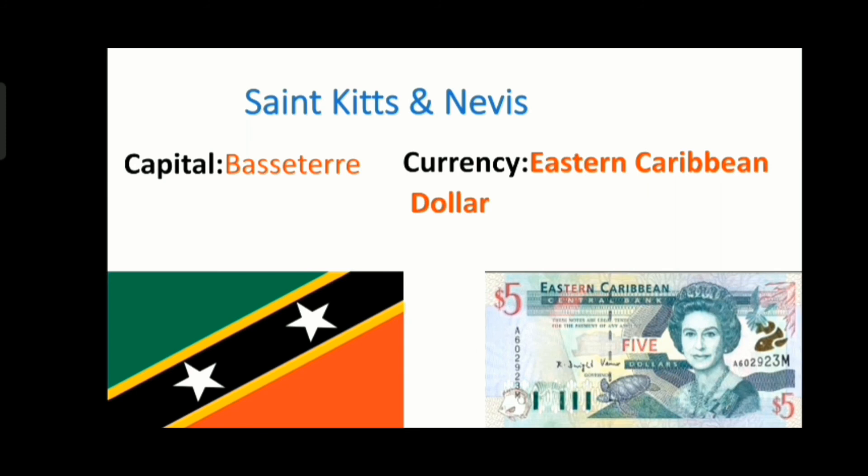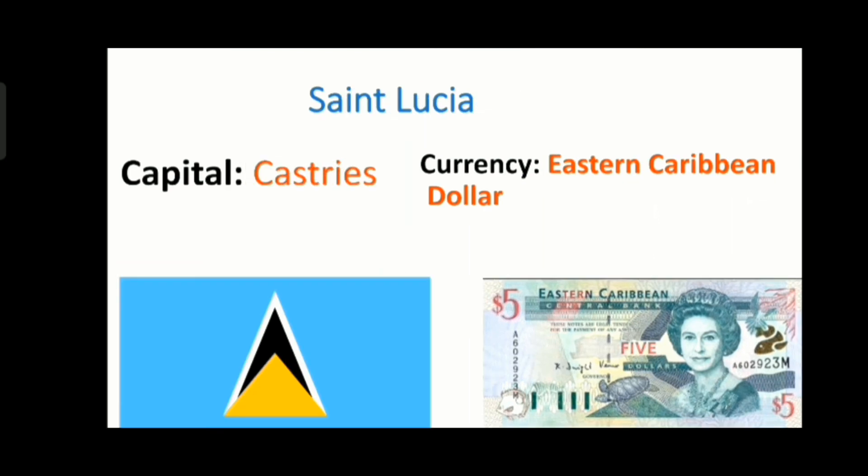The next country is Saint Kitts and Nevis and its capital is Basseterre and its currency is Eastern Caribbean dollar. It is the smallest country in North America area-wise. The next country is St. Lucia and its capital is Castries and its currency is Eastern Caribbean dollar.